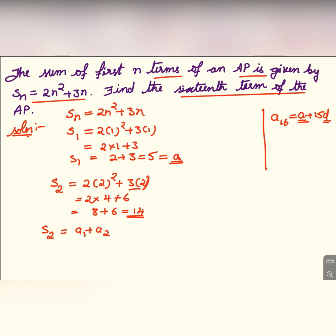S₂ we have got 14, and S₁ that is first term itself is 5. So 14 = 5 + a₂. We can find out a₂: 14 - 5 = a₂. Therefore a₂ = 9. So a₁ is 5 and a₂ is 9.